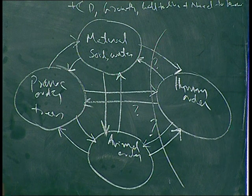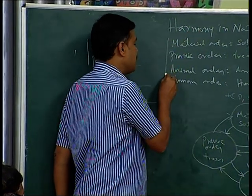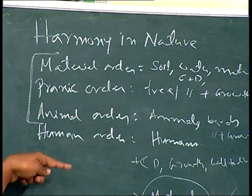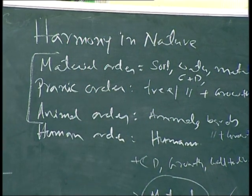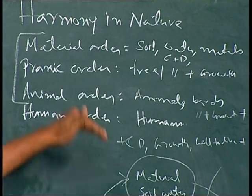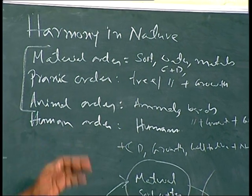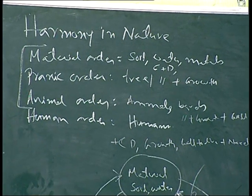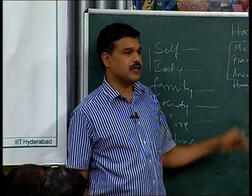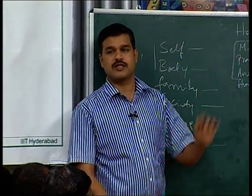Do we need to consider these things or not? For the existence of human beings on earth, these three things should be in normal condition. If material order is disturbed, human existence is disturbed. If pranic order is disturbed, human existence is disturbed. All four orders are currently existing - let us continue with that reality.